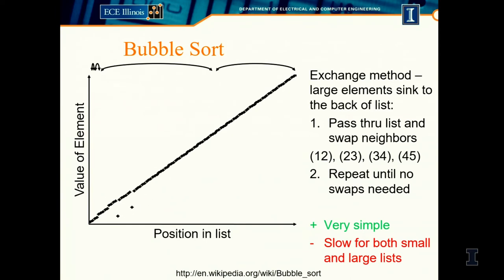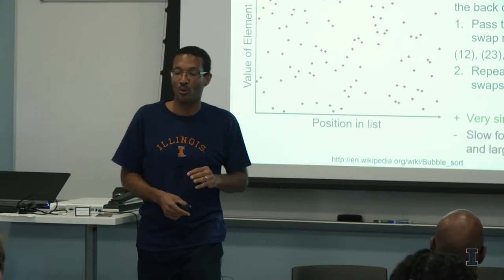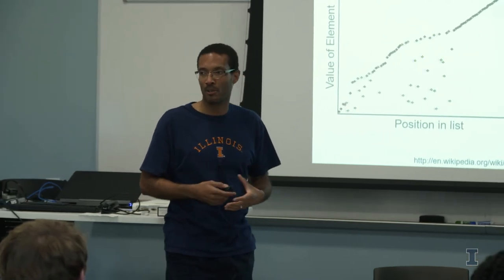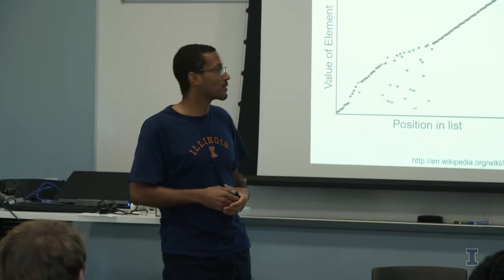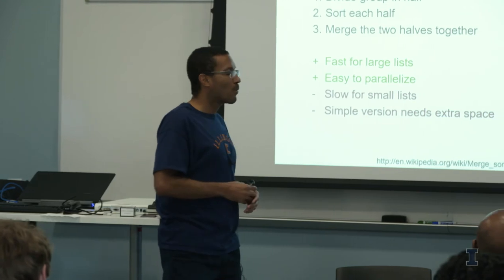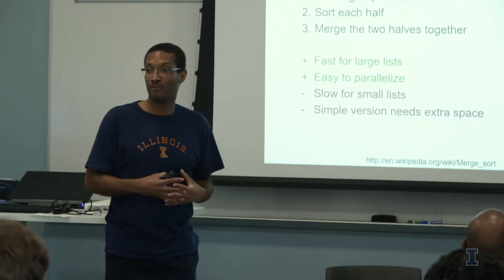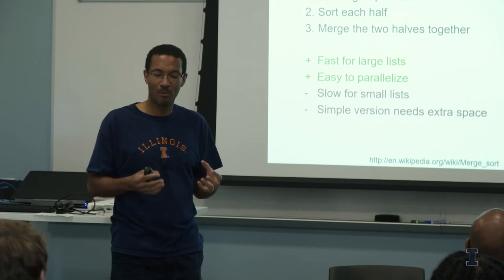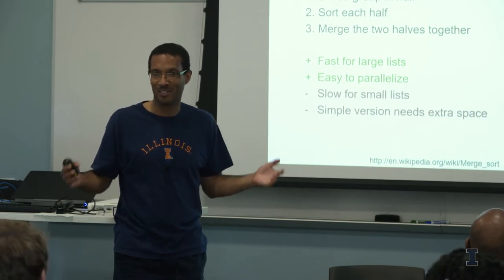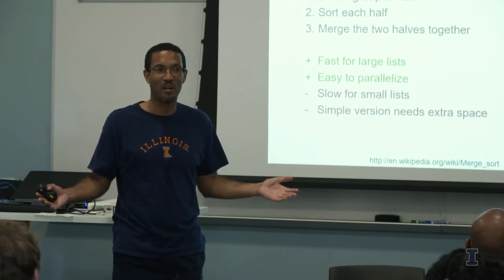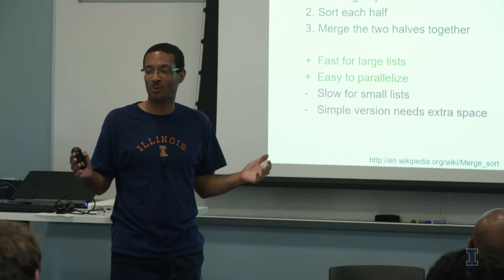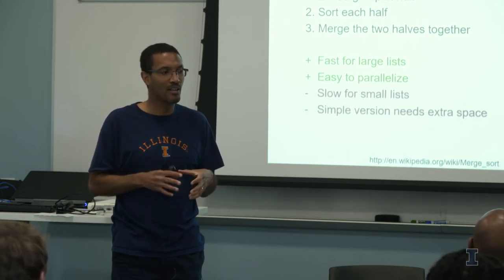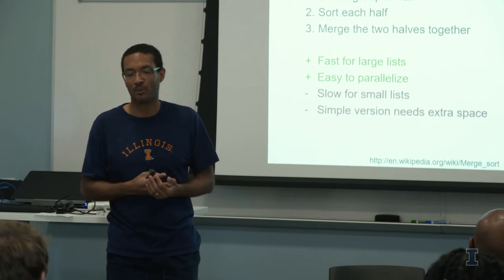Small objects bubble very, very slowly, but large objects plummet. Again, this is O(n²) — 10 times longer list means 100 times longer to sort. So what are strategies that are more efficient than O(n²)? The problem with sorting large lists is they're large. Let's think about how we can sort smaller lists and use those results to improve the overall algorithm.